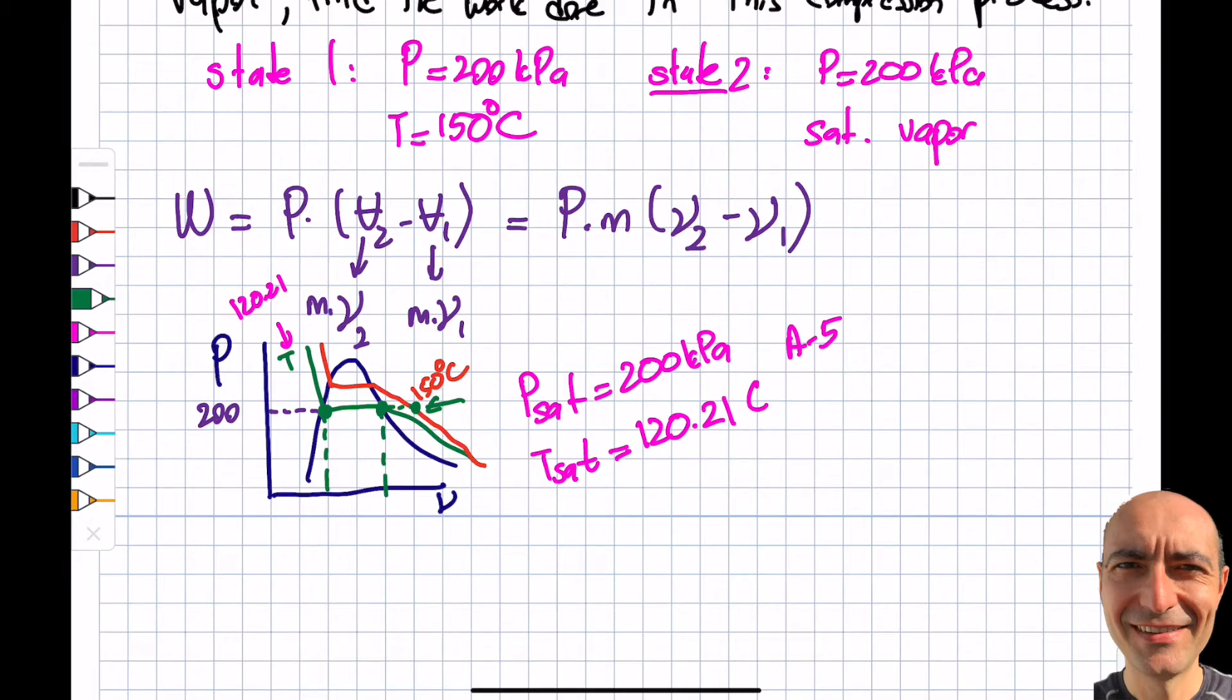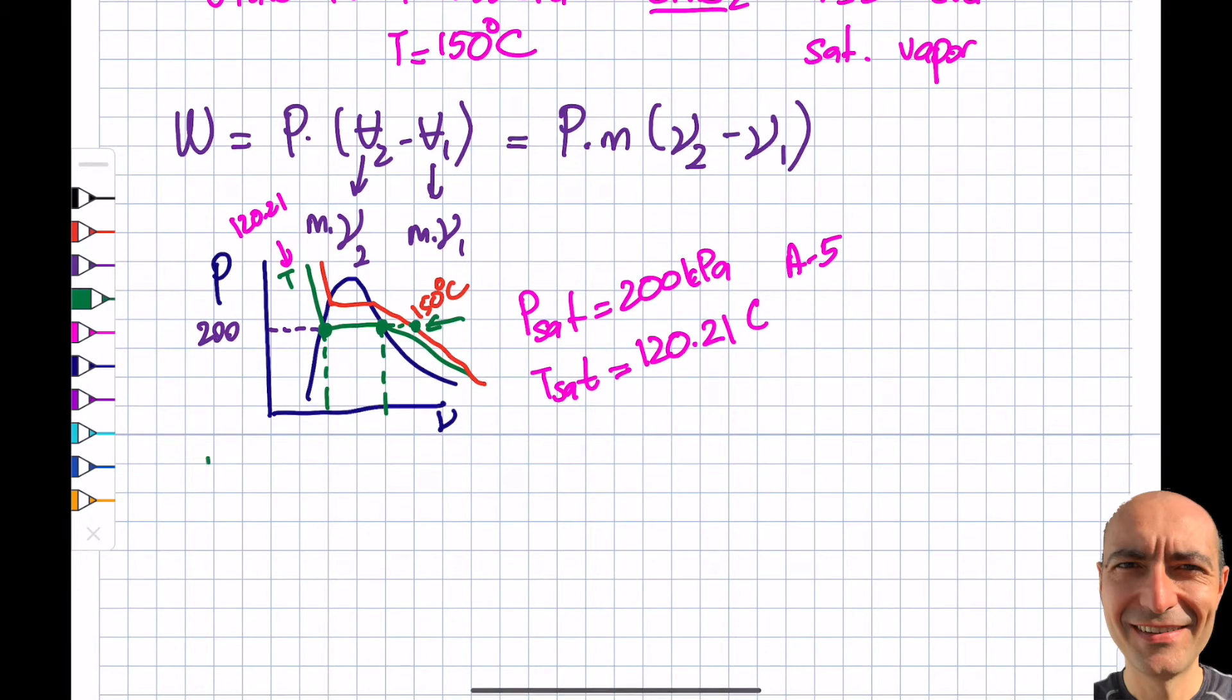Then what I have to do is go to table A-6 and look at that particular superheated vapor table. I find P = 200 kilopascal case and I find T = 150. I was lucky, I was able to find what I need.